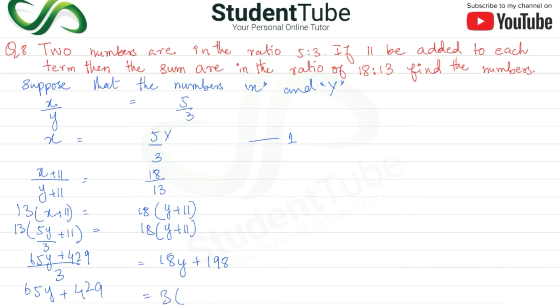So, here we have 0 next to it. Let's say 58y. This is 16y plus 198. So, 65y plus 429. Here we go. 3 multiply होगा तो यह हो जाएंगे 54y, 198 से होगा तो यह हो जाएगा 594.